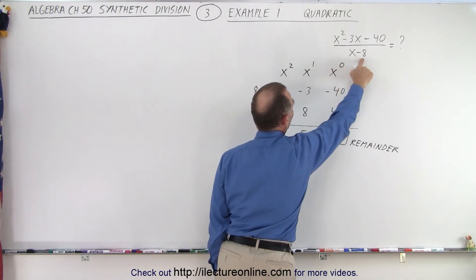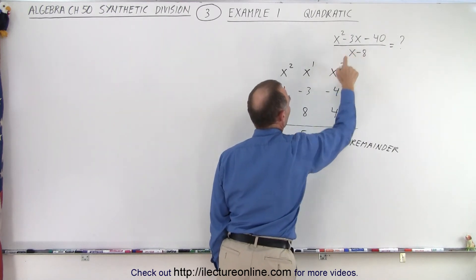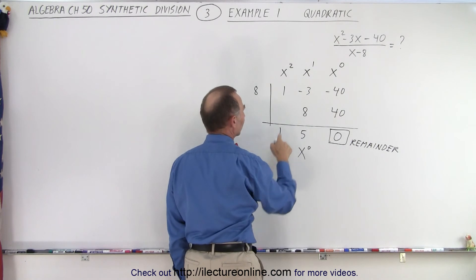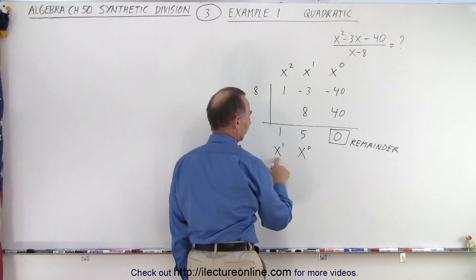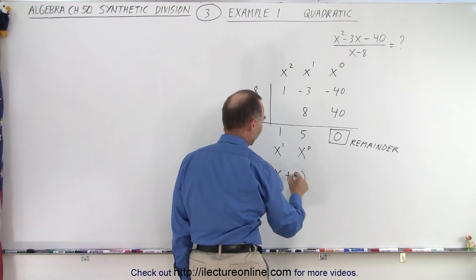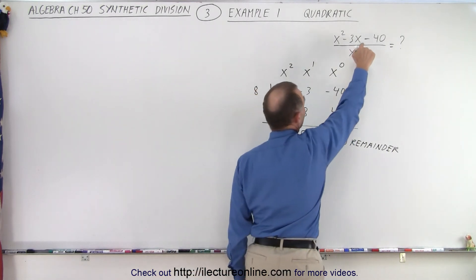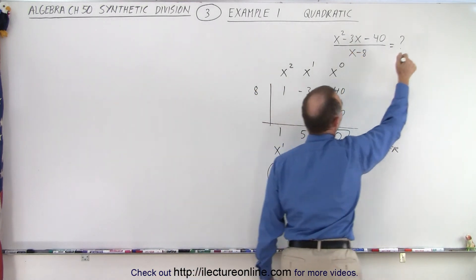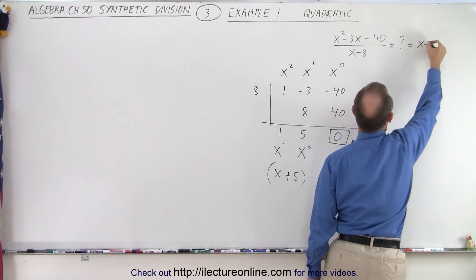If we only have an x minus 8 here, if this is x to the first power this simply reduces the answer from x squared to x to the first power. So the result is x plus 5. And so if we divide this polynomial by x minus 8 we get x plus 5.